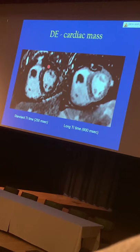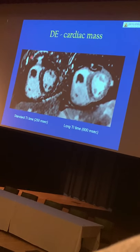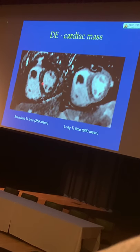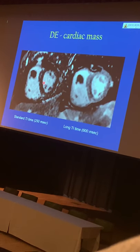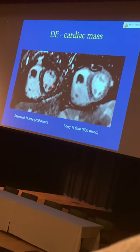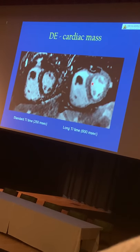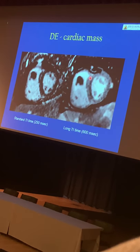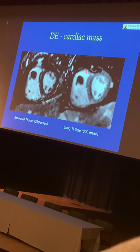Sometimes you notice an extra black blob sitting in the right ventricle, and you may wonder whether it's a tumor whose signal just got suppressed like the rest of the myocardium, or whether it's a blood clot. You can change the TI time to a longer time, because you would expect that a tumor would take up some gadolinium just like the myocardium, so the signal would change. But because a thrombus would not take up any gadolinium, the signal would not change and it would remain a black blob.